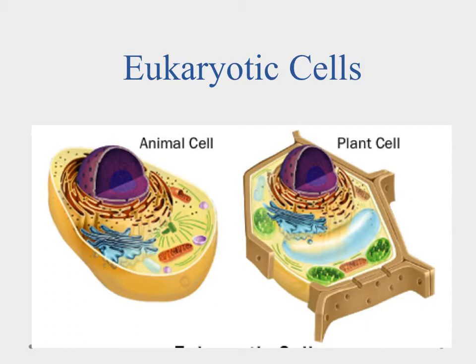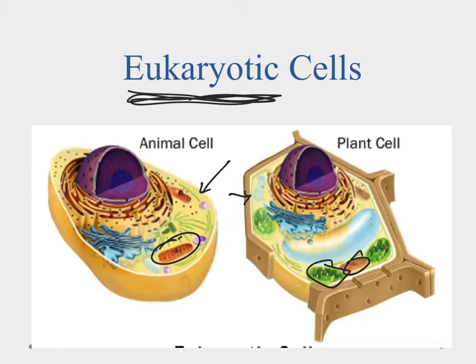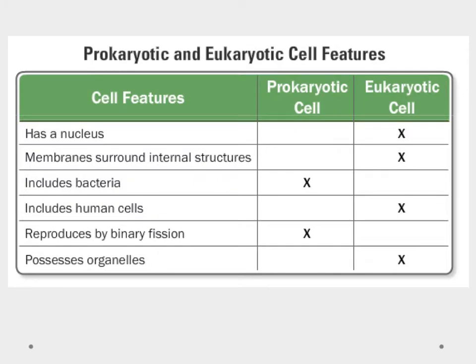Eukaryotic cells differentiate themselves from prokaryotic cells in that they have multiple membranes. They still have an external membrane separating them from the outside world, but inside there are membrane-bound structures with specialized areas of function. The easiest way to identify a eukaryotic cell under a microscope is to look for the large structure in the middle — that's the nucleus.